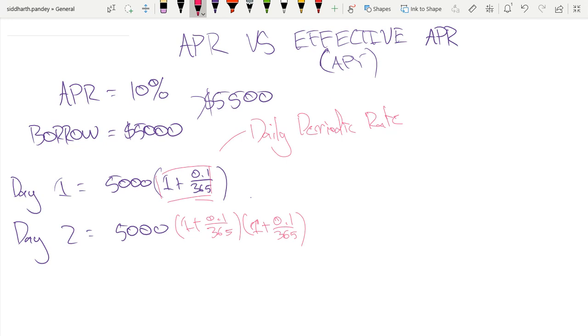And for day three, it would be again, because it's compounding based off of the previous amount. So how much would I be paying by day 365 once my loan is over? Well, by day 365, I'd be paying $5,000 times by my daily periodic rate: 1 plus 0.1 over 365 to the power of 365, because it's going to compound 365 times.